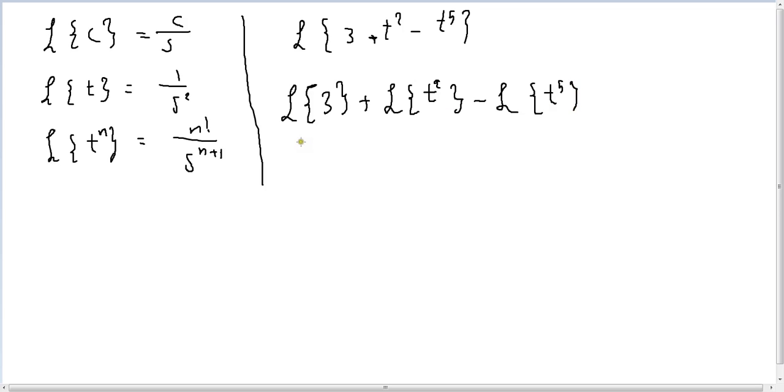So, we know Laplace of any constant 3, so it's going to be 3 over s plus Laplace of t to the power of n. So, it's going to be the factorial of n, 2 by 1 over s to the 2 plus 1. I'm just making it like this to understand the rule, but I can just shortcut to 2 over s cube.